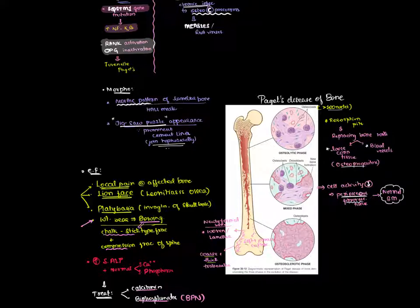The first stage is the osteolytic stage where there is increased osteoclasts. Remember that osteoclasts will have greater than 100 nuclei. Due to increased osteoclasts, there will be increased resorption pit formation, which replaces the bone with loose connective tissue and blood vessels.